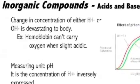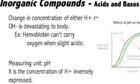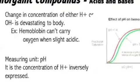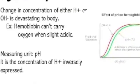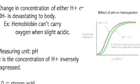Changes in concentration of either the hydroxyl or hydrogen ions is devastating for the body. For example, if we're too acidic, oxygen cannot be carried by the hemoglobin. Well, that right there knocks us out.